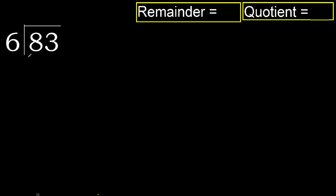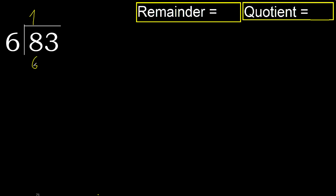83 divided by 6. Starting with 8 — 6 multiplied by which number is nearest to 8 but not greater? 6 multiplied by 2 is 12, which is greater. 6 multiplied by 1 is 6, which is not greater.